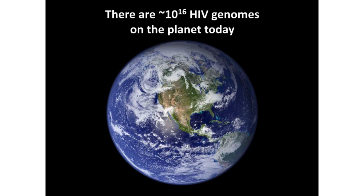There are 10 to the 16th HIV genomes on the planet right now. This is calculated based on the millions of people infected with the virus and how many genomes each person carries on average. That pool is so large that within it there is already a genome resistant to every one of the 30-plus antiviral drugs we have against HIV — and probably resistant to any antiviral we can ever make. That's how big that number is.